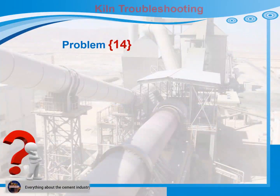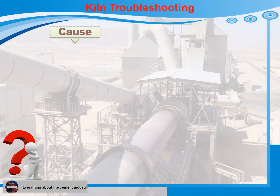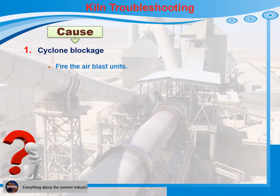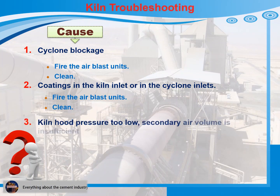Problem 14: Greater negative pressure in the preheater, kiln inlet, or kiln hood. Cause 1: Cyclone blockage. Recommendations for action: 1) Fire the air blast units. 2) Clean. Cause 2: Coatings in the kiln inlet or in the cyclone inlets. Recommendations for action: 1) Fire the air blast units. 2) Clean. Cause 3: Kiln hood pressure too low — secondary air volume is insufficient. Recommendations for action: Optimize the kiln hood pressure control.